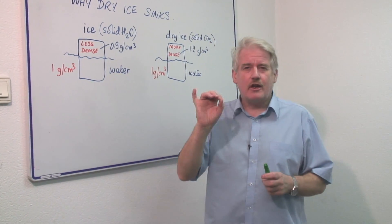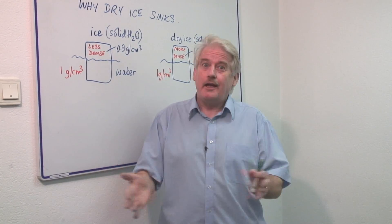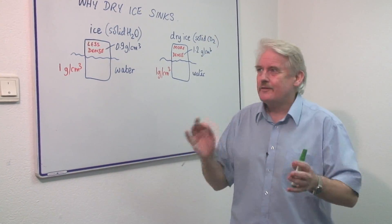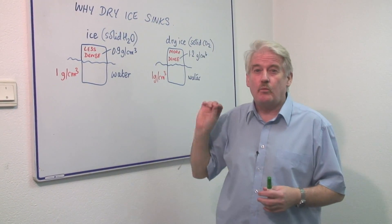Why dry ice sinks in water. Of course, if I try to float dry ice on mercury it will float. Iron will float on mercury. This is a different question. Why dry ice sinks in water?